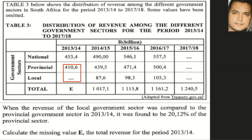Remember that billion is important and must be included in your number formats. At the bottom there is an additional note: when the revenue of the local government sector was compared to the provincial sector in 2013-14, it was found to be 20.12% of the provincial sector. In other words, the local amount — indicated by the red square — is missing.